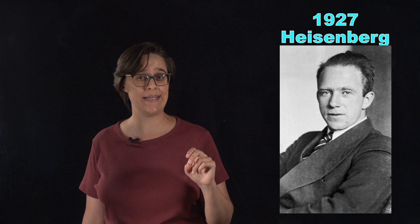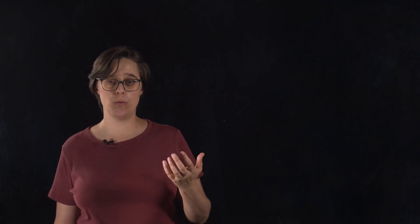In 1927, Werner Heisenberg built on the idea of wave-particle duality and formulated his uncertainty principle. He was considering the limits of how accurately we can measure the properties of subatomic particles, and he found that there is a fundamental limit to how accurately we can simultaneously measure both a particle's position and its momentum. The more accurately we measure one, the less accurately we can determine the other.